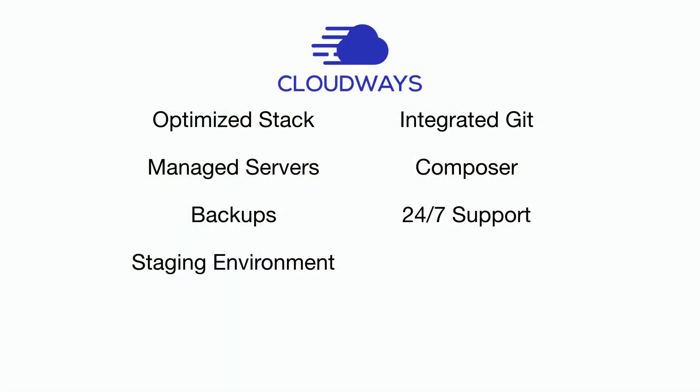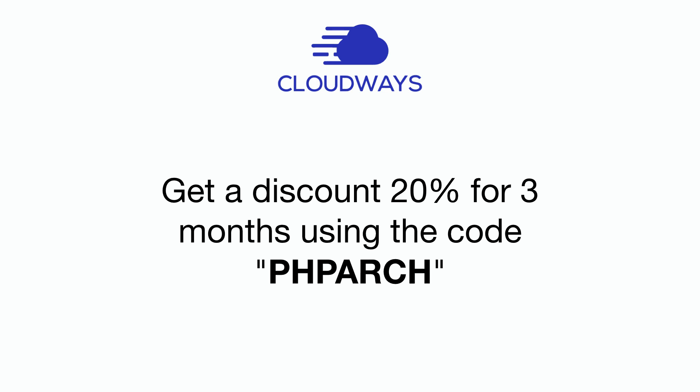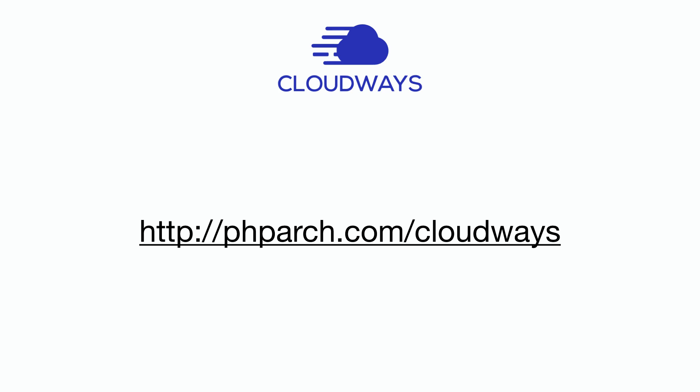We appreciate our sponsors because they make this episode possible. Managing servers can be a time-consuming and error-prone process — think of how often you've seen reports of accidental AWS bills in the tens of thousands of dollars. Cloudways offers peace of mind and flexibility so you can focus on growing your business instead of dealing with server management. With Cloudways, you get an optimized stack, managed servers, backups, a staging environment, integrated Git, pre-configured Composer, 24/7 tech support, and a choice of five cloud providers: AWS, DigitalOcean, Linode, Google Cloud, and Vultr. For 20% off the first three months, use our code PHPARCH — that's P-H-P-A-R-C-H — or go to phparch.com/cloudways. Thank you, Cloudways, for your support.